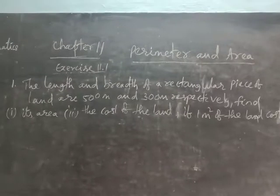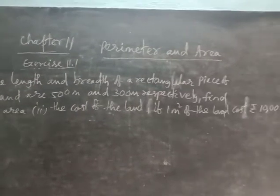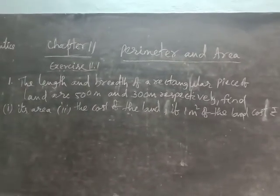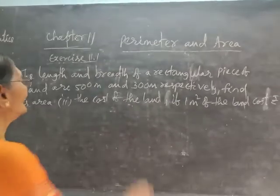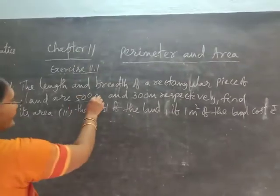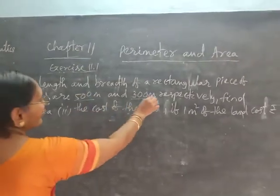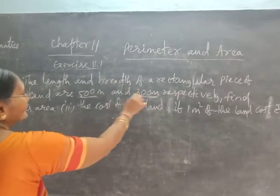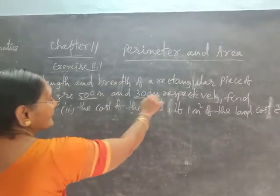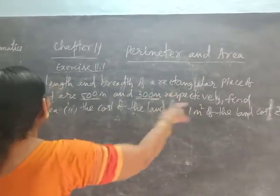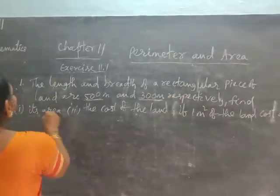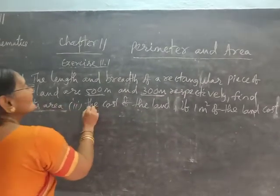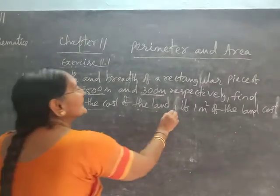Exercise 11.1, Question number 1. The length and breadth of a rectangular piece of land are 500 meters and 300 meters respectively. Find its area. Number 2: find the cost of the land if 1 square meter costs 10,000 rupees.